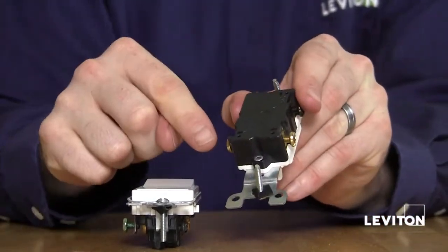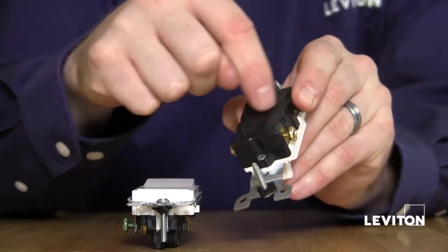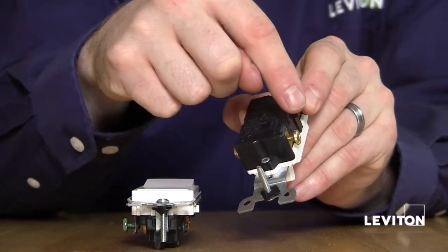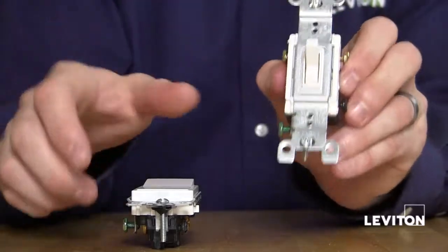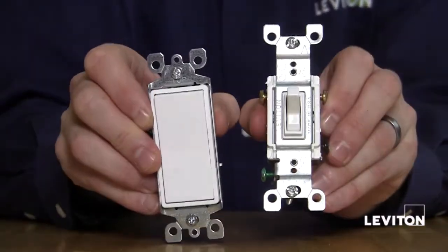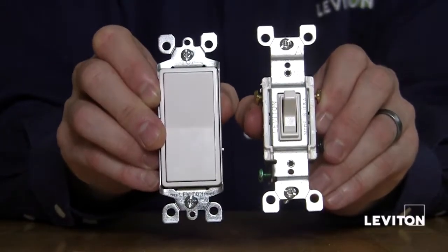you actually move power from one wire to the next, internally moving it from one brass terminal to the next. This is what allows you to control the light from either location. And that's a three-way switch.